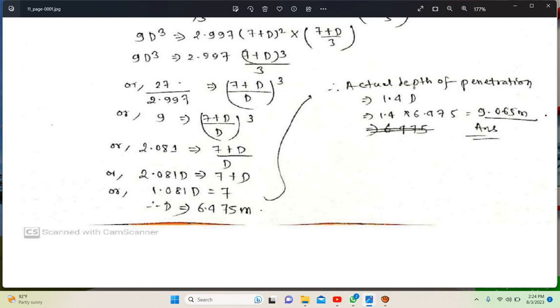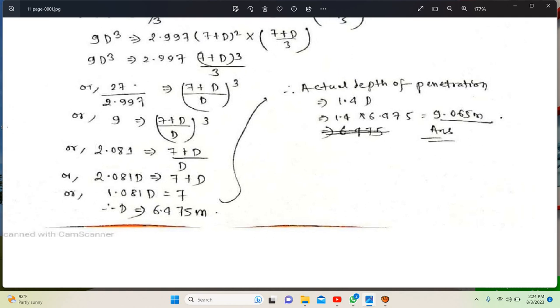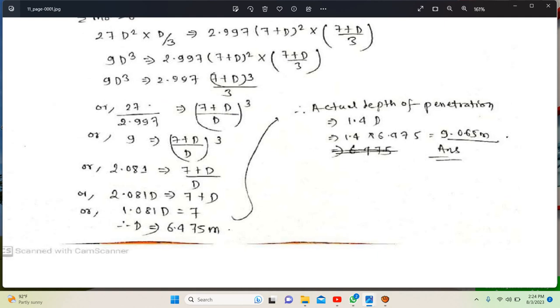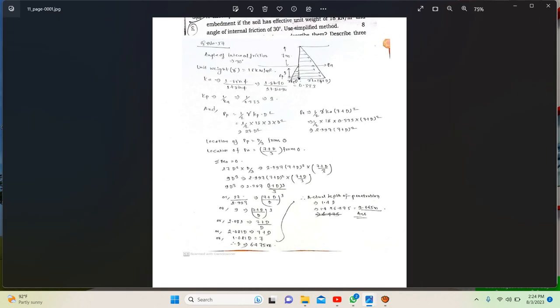The actual depth of penetration is 1.4 times d, which equals 1.4 times 6.475, giving us 9.065 meters as the actual depth.